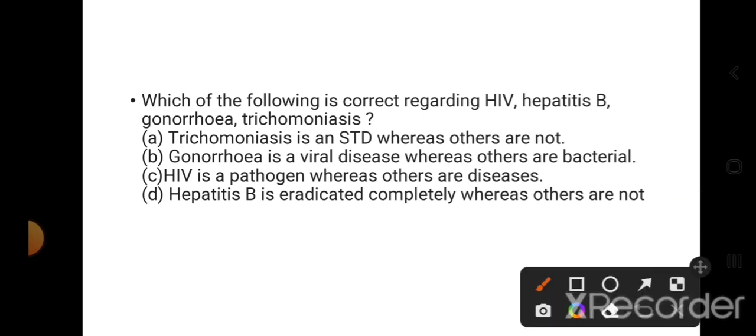Which of the following is correct regarding HIV, Hepatitis B, gonorrhea, and trichomoniasis? Here you can see HIV, human immunodeficiency virus, is a virus - it's the name of the virus. All the others given here are diseases. Very clear: HIV is the pathogen, whereas the others are diseases. So this is the right option.